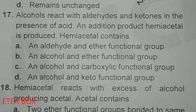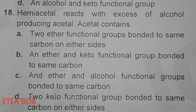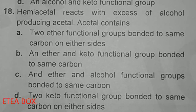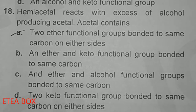Alcohols react with aldehydes and ketones in the presence of acid to form hemiacetal as the addition product. Hemiacetal contains both an alcohol and an ether functional group; option B is correct. Hemiacetal reacts with excess alcohol to produce acetal. Acetal contains two ether functional groups bonded to the same carbon on either side; option A is correct.